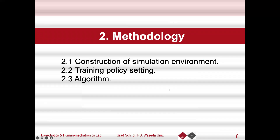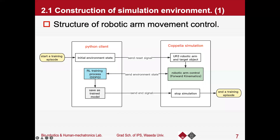I will talk about the methodology part of our research. In order to find the best experimental scheme for reinforcement learning training, we train a robotic arm to finish control tasks by using the DDPG algorithm. We realize this training process by a client-server structure supported by the remote application interface provided by the CoppeliaSim simulation. We use this structure to test whether the robotic arm can finish the control task or not.